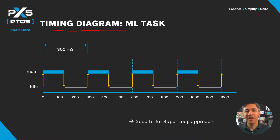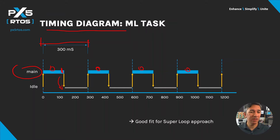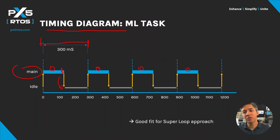This timing diagram explains the scenario. The main task performs machine learning every 300 milliseconds, and when the task is completed, it goes into idle or low power mode for the remainder of the 300 milliseconds. In this example, a simple bare metal control loop might be enough, eliminating the memory and processing cycles required by a more robust RTOS solution. However, the application code has all the responsibility for allocating processor cycles and meeting any real-time requirements.